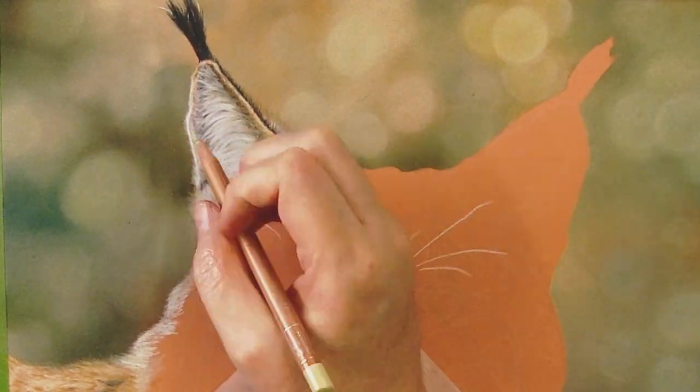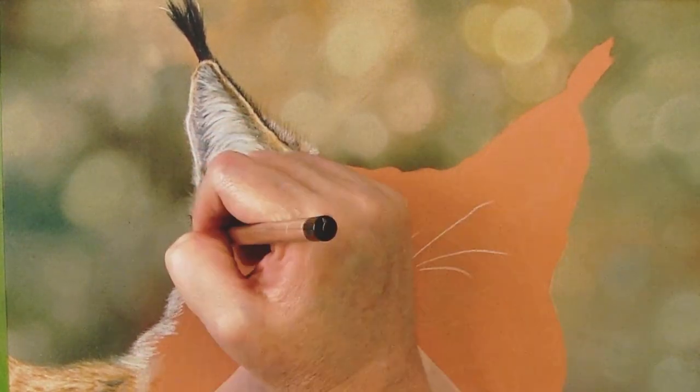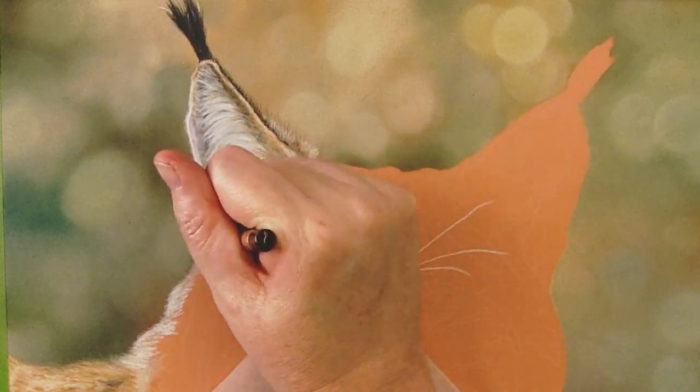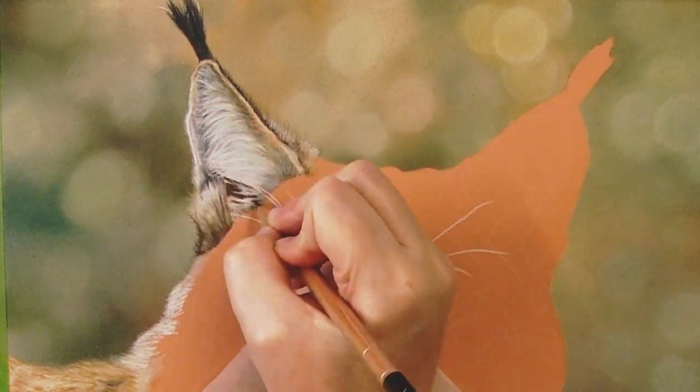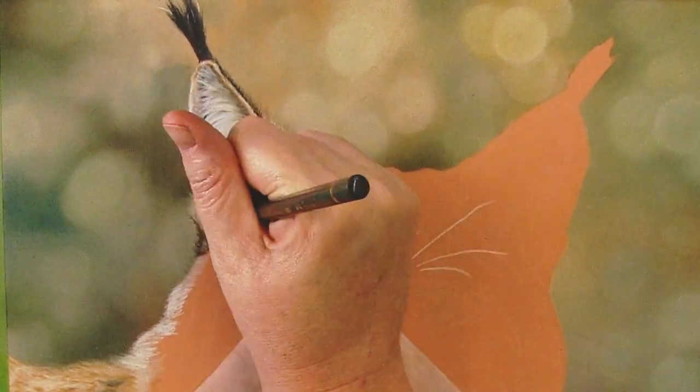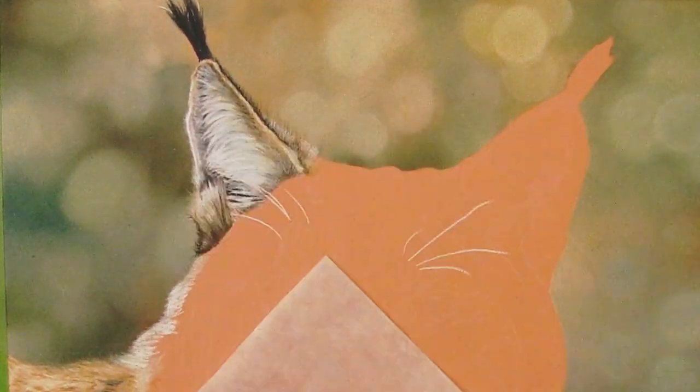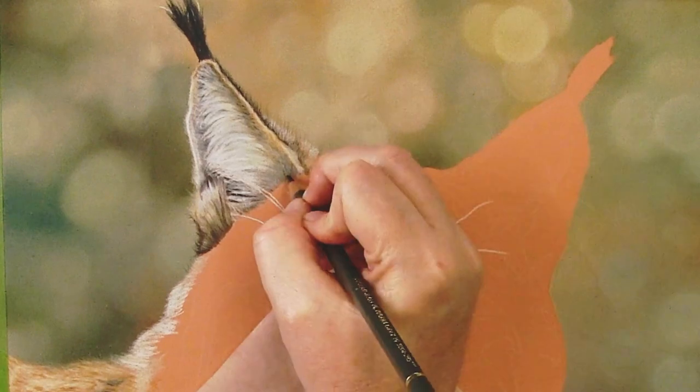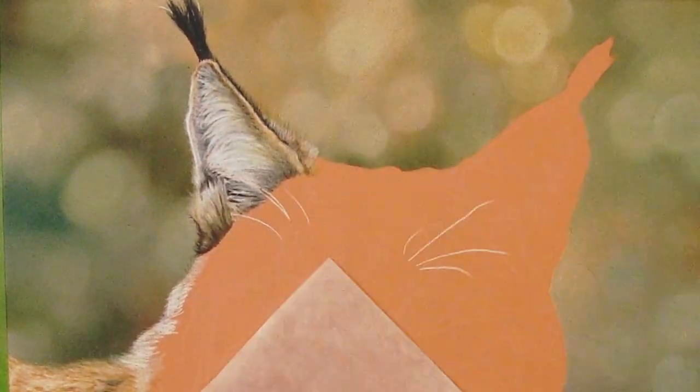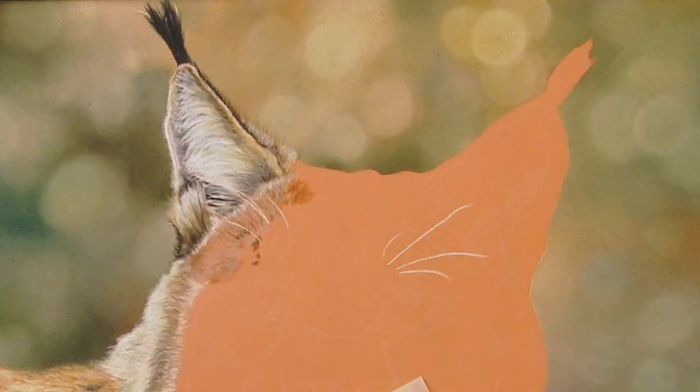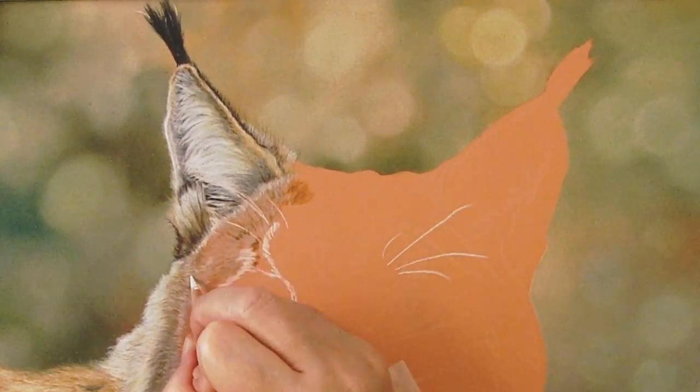It is very important throughout the entire piece of drawing fur to not only get the values correct but also the length and direction of the fur in each individual area. This can really be seen around the face with the very long hairs and then the shorter hairs around the rest of the face but long in front of the ears. Paying attention to these details is what really sets you up for success in an animal portrait like this.